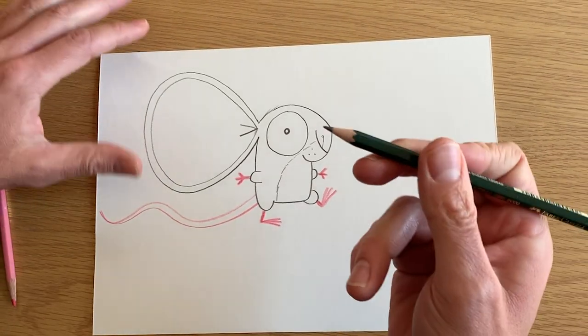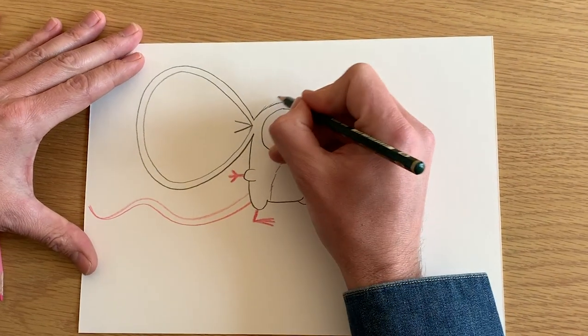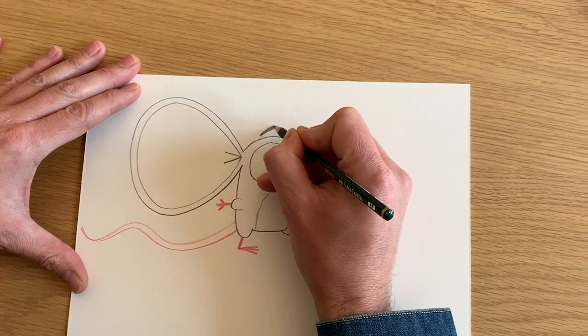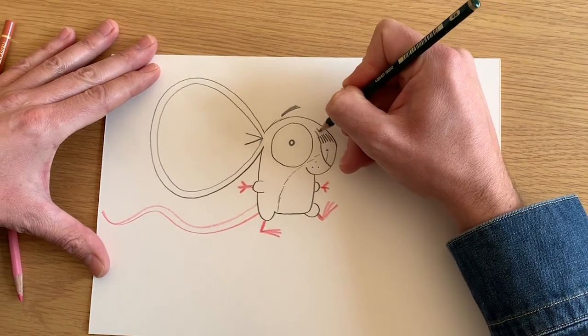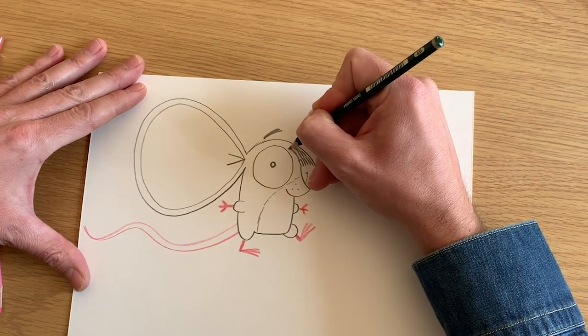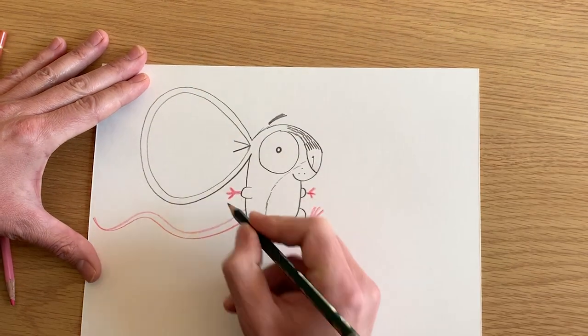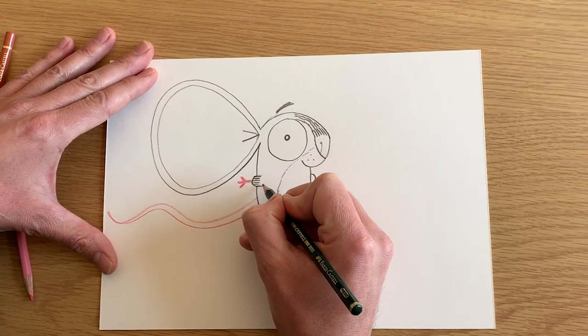And then go back to your drawing pencil and you draw a little eyebrow like that. And then you can add in some fur details if you want like this. And do that on the legs and the arms.